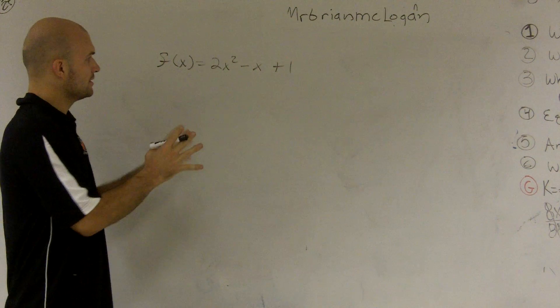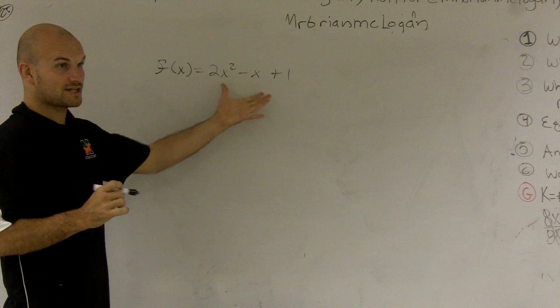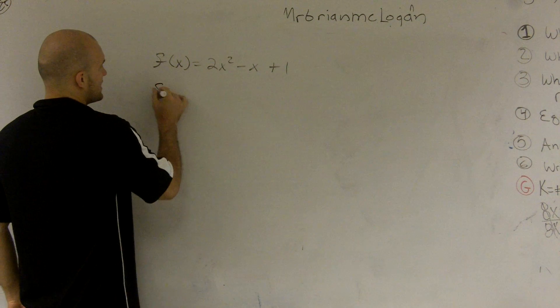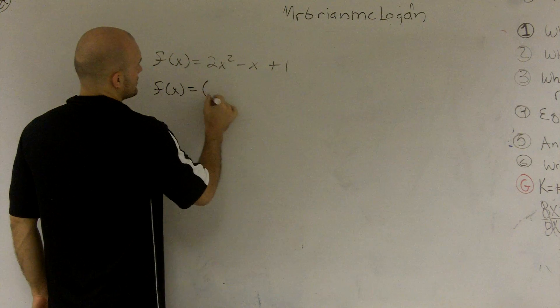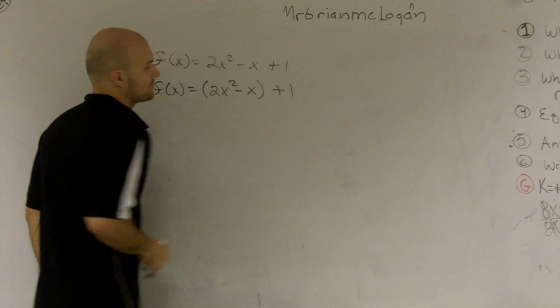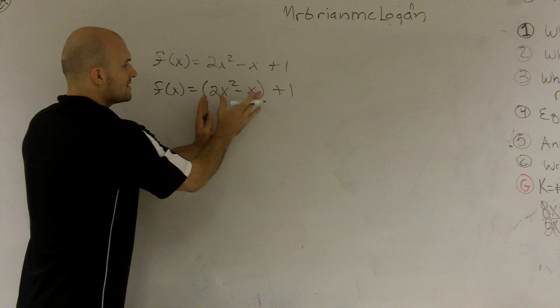All right, remember completing the square. First thing I want to do is I want to put brackets around my x values because that's what I want to make to a perfect square trinomial. So I say f of x equals 2x squared minus x plus 1. I want to focus in on these x's.